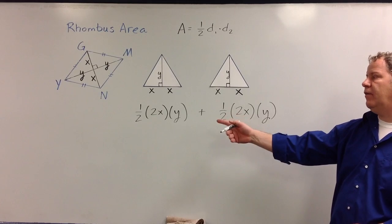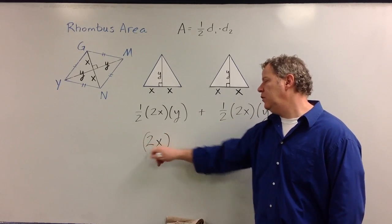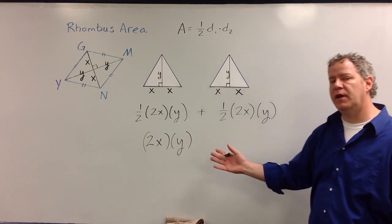Well, if you have half, and you have half of the same thing each time, then you have a whole. So this would be the same thing as a whole 2x times y.